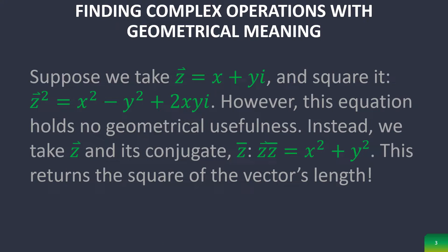And so you can actually define the magnitude of a vector z, which is a complex vector, as equal to the square root of that vector times the vector's conjugate, which equals the square root of x² plus y².